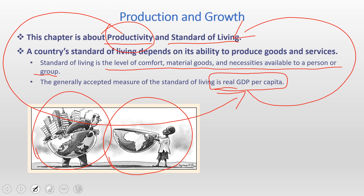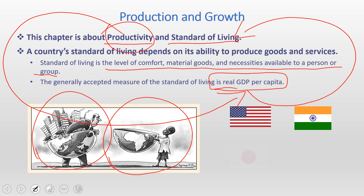Those poor countries are mostly in Africa, some parts of Asia, and other regions. The rich countries are mainly Western nations. The United States is very rich — its real GDP per capita is very high, so its standard of living is also super high. In the developing world, India has low real GDP per capita and lower standard of living. Japan has a high standard of living, while Zimbabwe has a low standard of living.